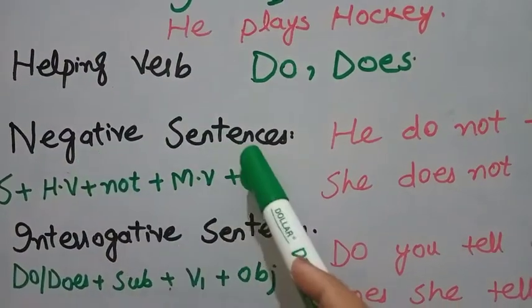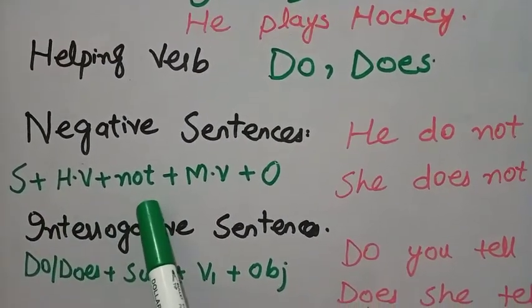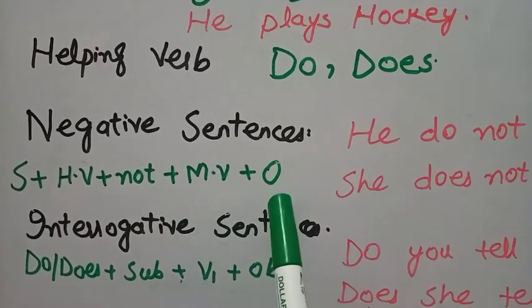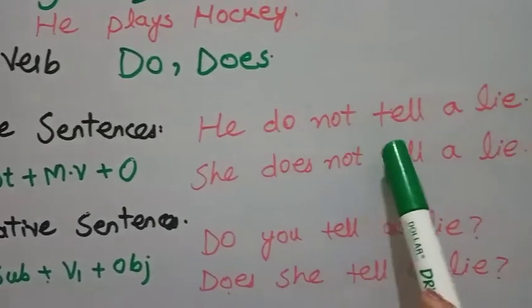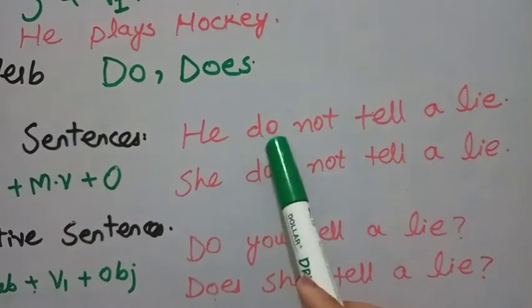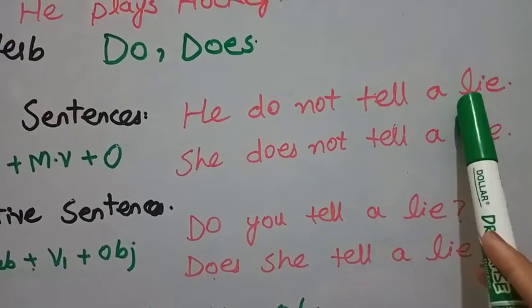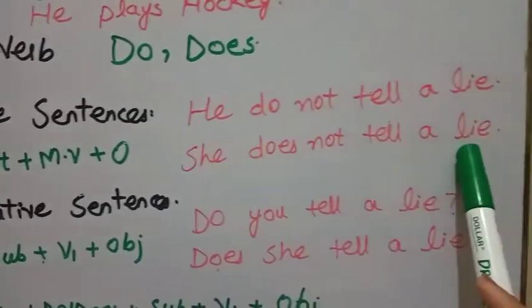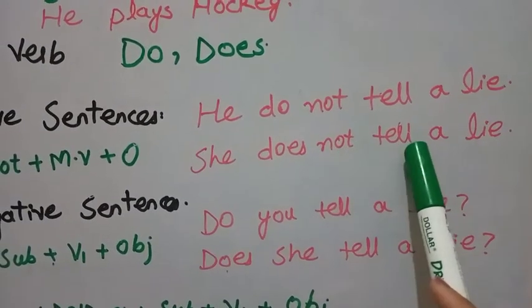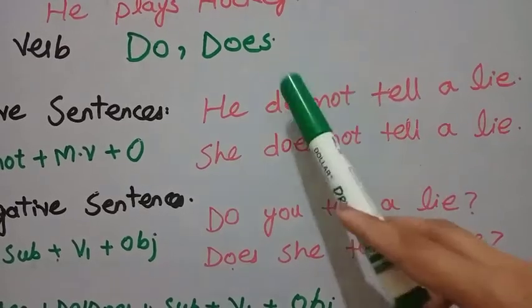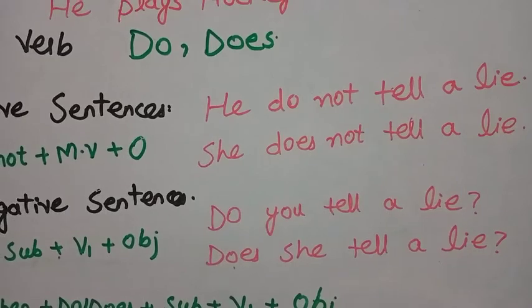For negative sentences, the structure is: Subject + Helping Verb (do/does) + not + Main Verb (V1) + Object. For example: 'He does not tell a lie' — subject, then helping verb 'does,' then 'not,' then main verb 'tell,' then object. 'She does not tell a lie.' The use of 'do' versus 'does' was explained in the previous video — please watch it to avoid confusion in the present indefinite tense.